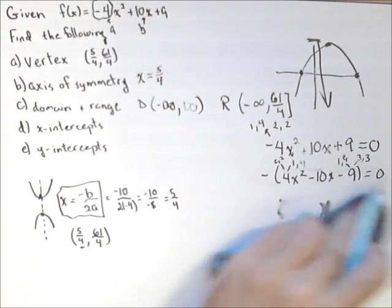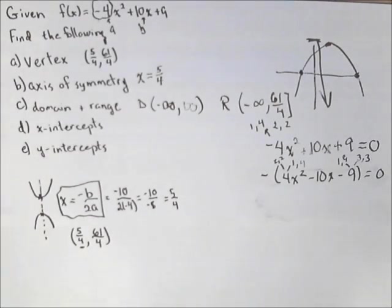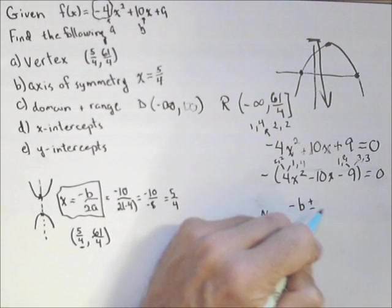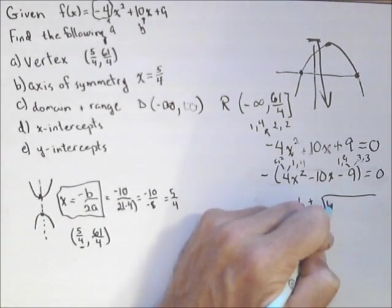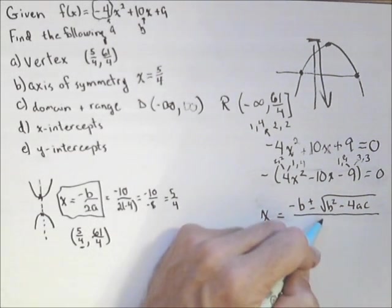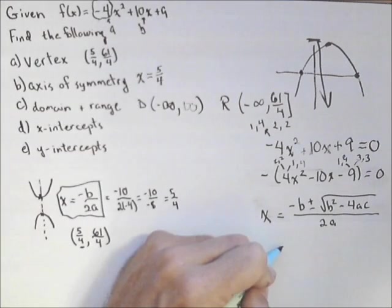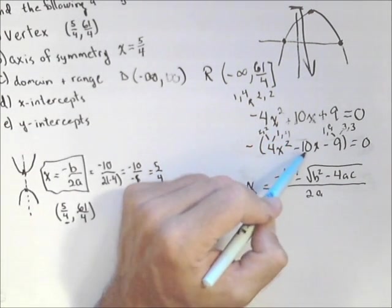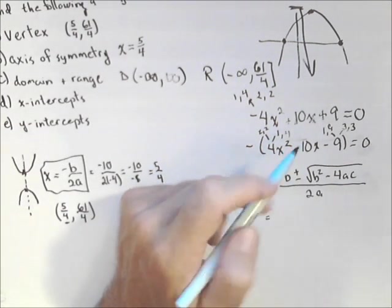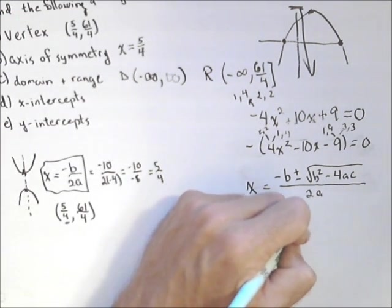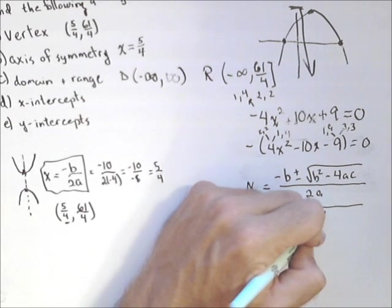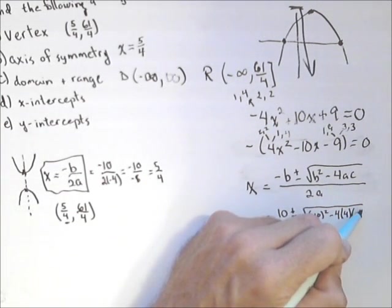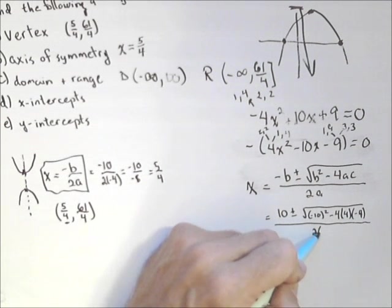So let's go ahead and apply the quadratic formula and see what we get for zeros. The quadratic formula is, as a reminder: x = (-b ± √(b² - 4ac))/2a. And for our problem, we can use either version. Let's go ahead and use our one with the negative factored out. So x = (10 ± √((-10)² - 4(4)(-9)))/(2(4)).